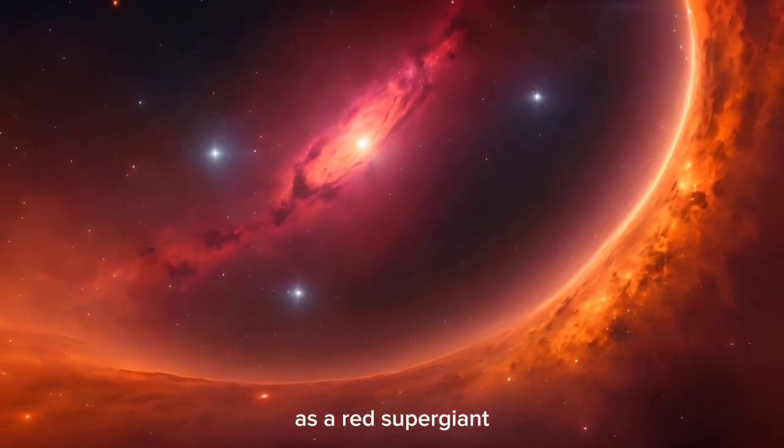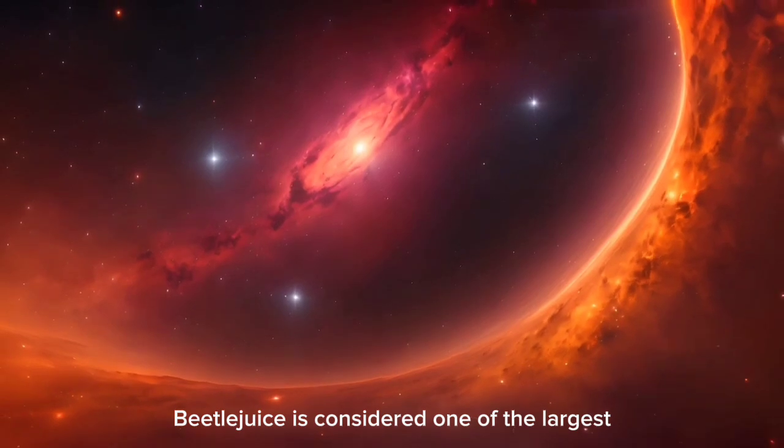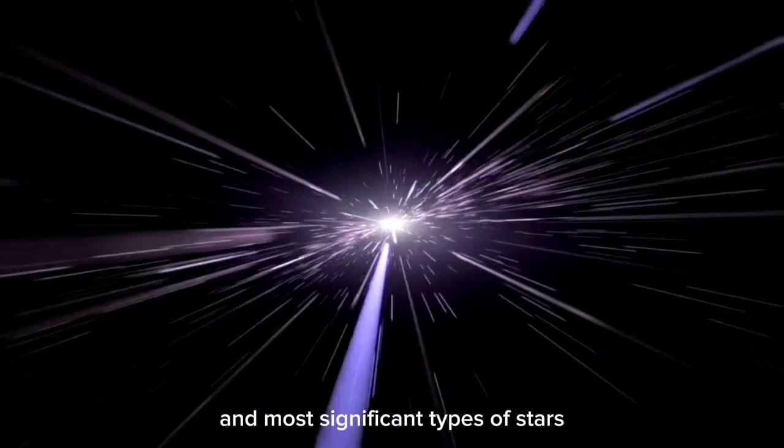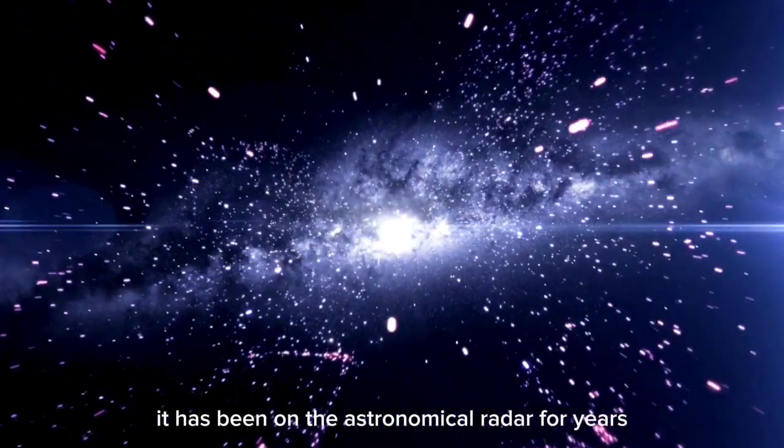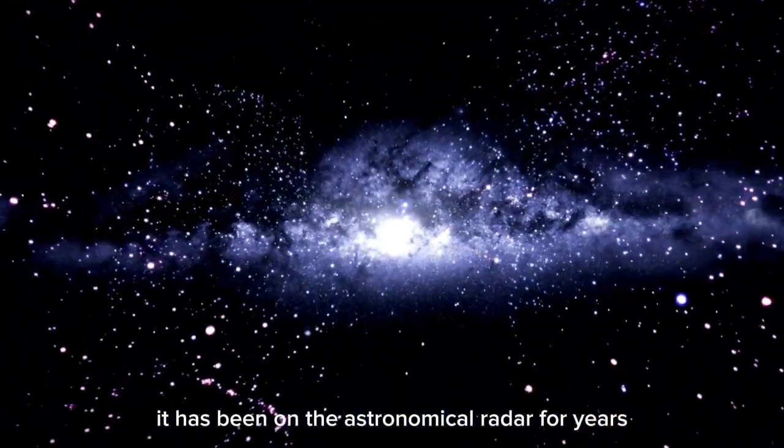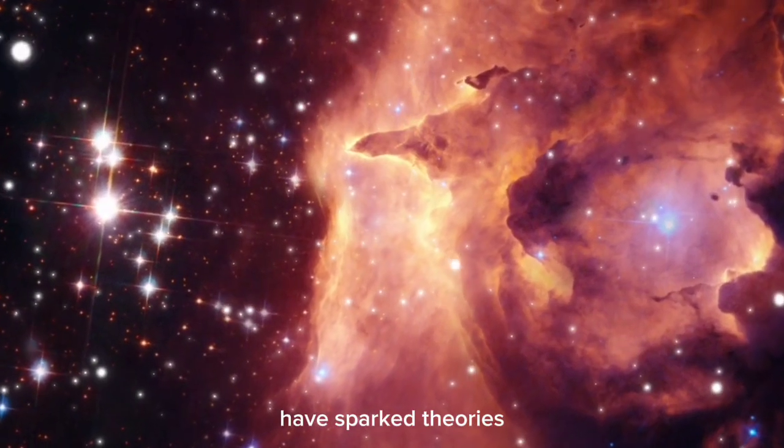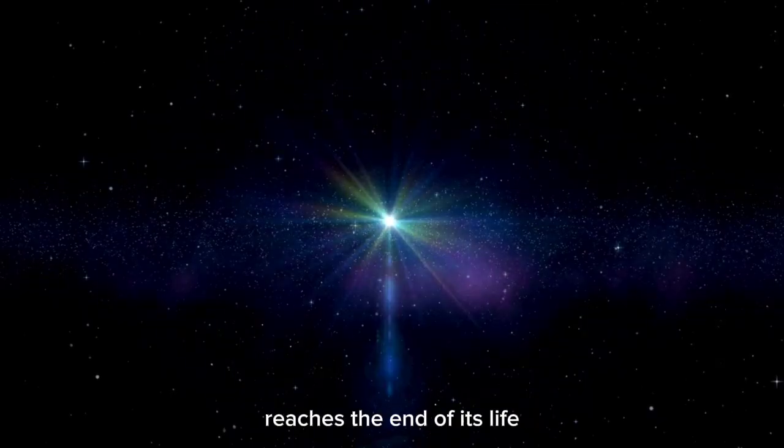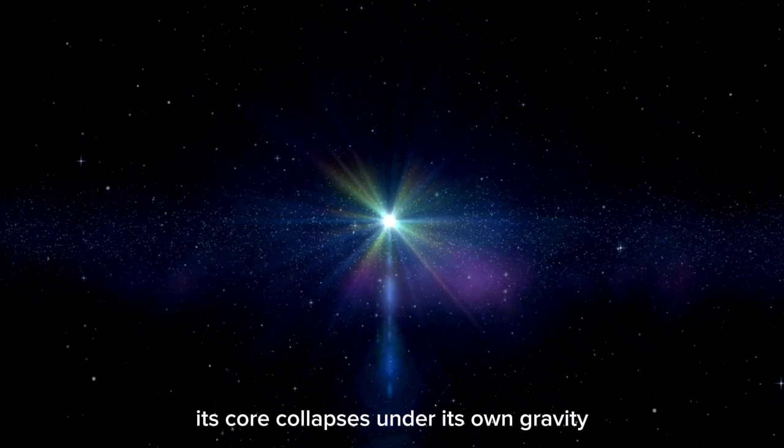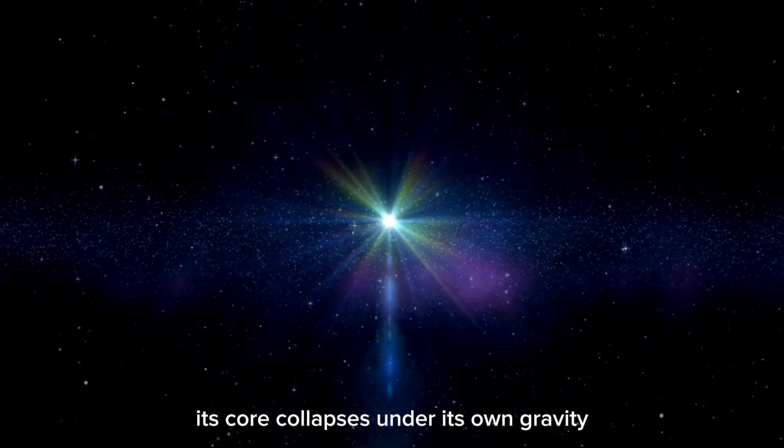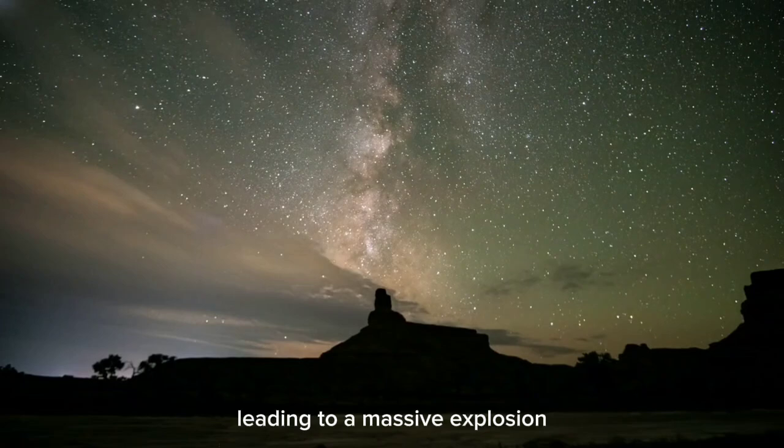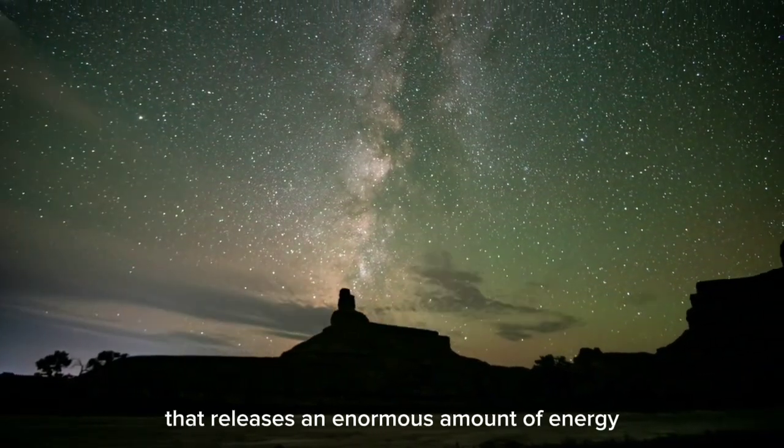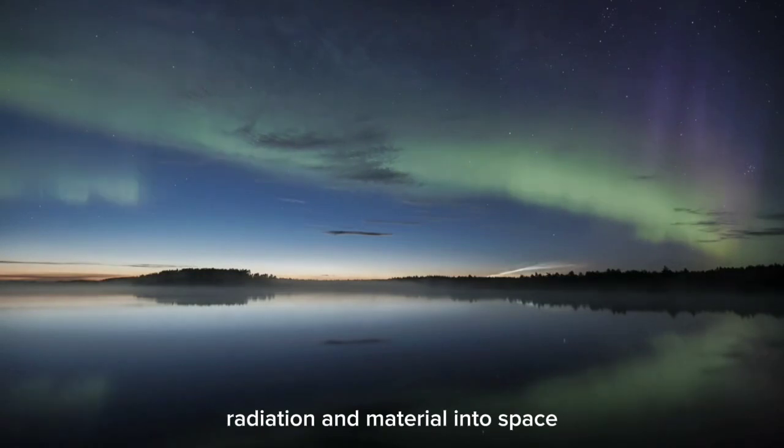As a red supergiant, Betelgeuse is considered one of the largest and most significant types of stars. It has been on the astronomical radar for years, but its recent fluctuations in brightness have sparked theories that it is preparing for a supernova. When a star like Betelgeuse reaches the end of its life, its core collapses under its own gravity, leading to a massive explosion that releases an enormous amount of energy, radiation, and material into space.